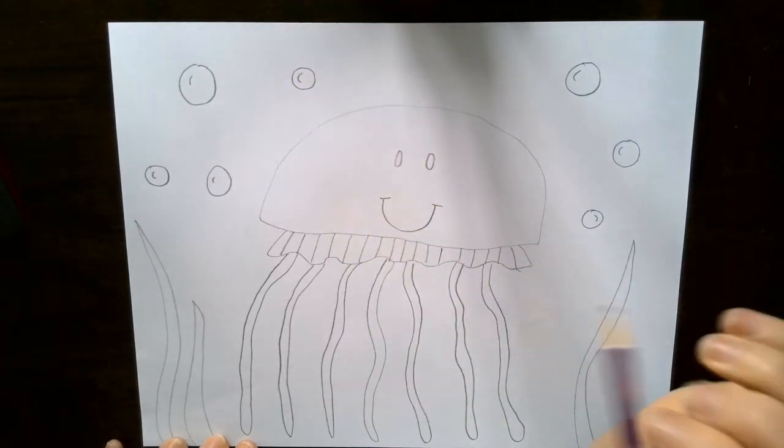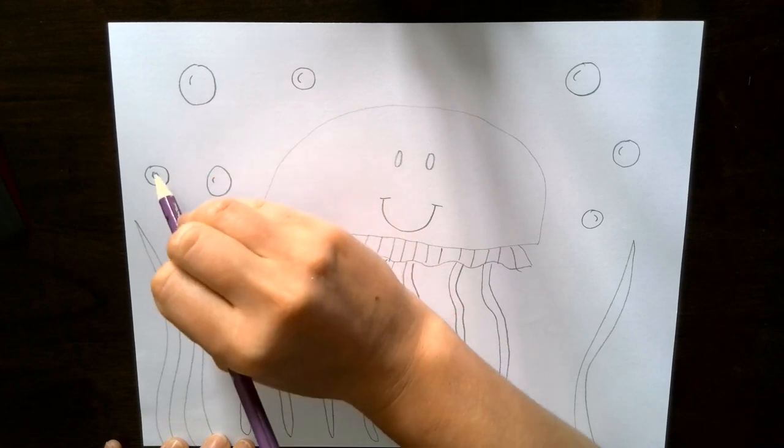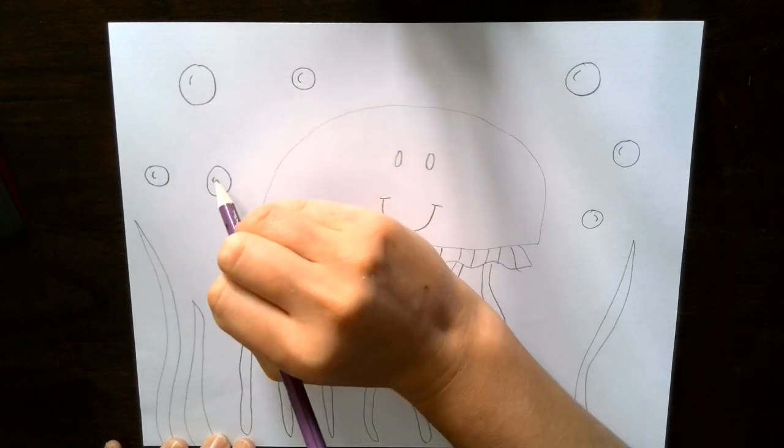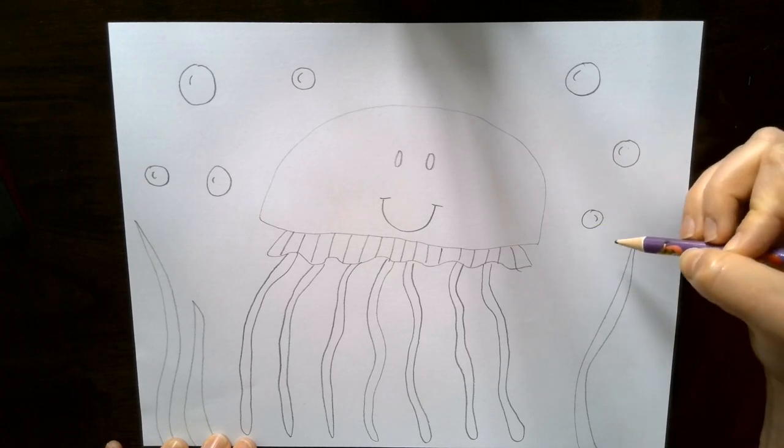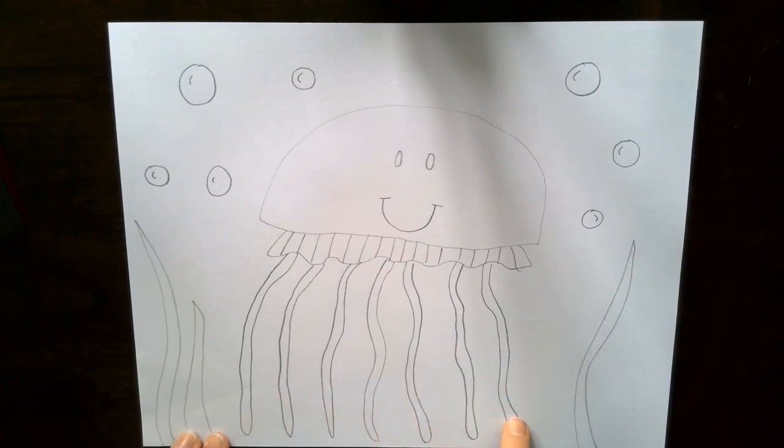Let's count how many bubbles I have. One, two, three, four, five, six, seven. Oh, I have a connection. I'm wondering if you noticed. What do you think? Yes. The jellyfish had seven tentacles and I made seven bubbles. That was a neat coincidence.